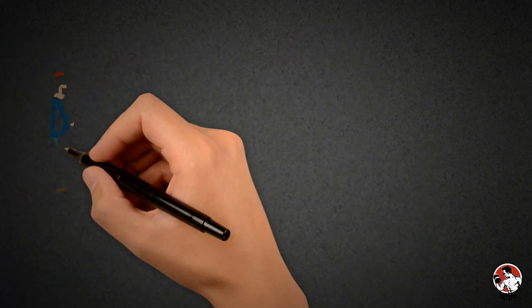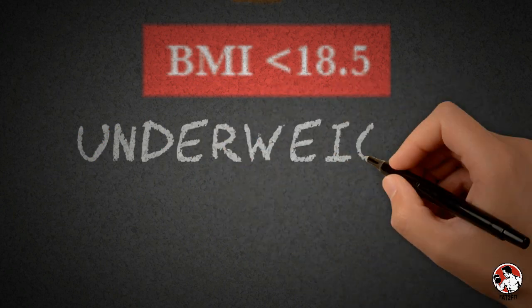A BMI of less than 18.5 indicates that you are underweight so you may need to put on some weight.